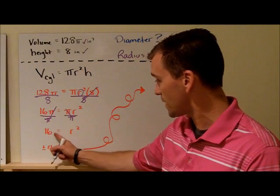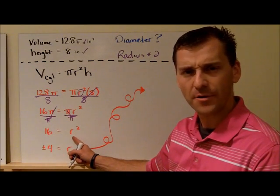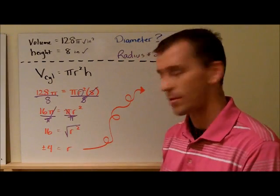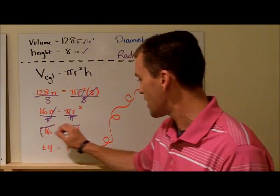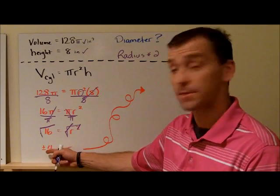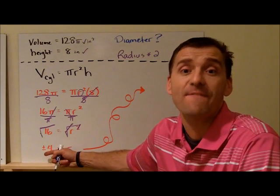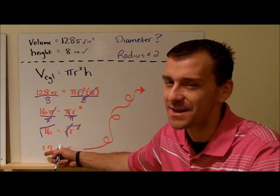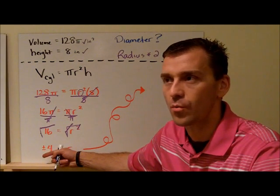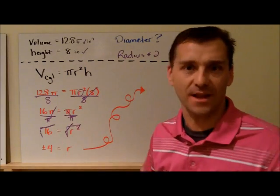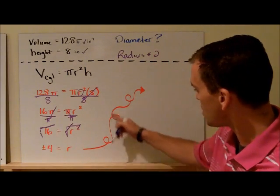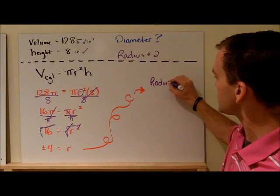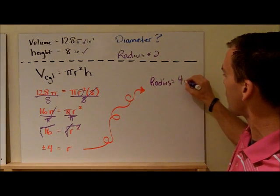How do I get rid of that little squared? Algebraically, I must undo the operation by square rooting it. I square root both sides. The square root of 16 is plus or minus 4. Negative 4 doesn't make sense because you can't have a negative radius length. That means the radius of this cylinder is 4 inches.